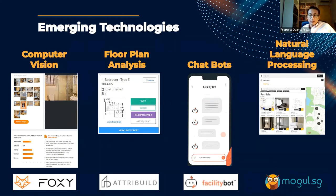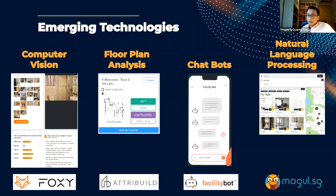A third emerging technology is chatbots. A recent application we've seen is in facilities management. Facility Bot is a company based in Singapore that integrates into WhatsApp, WeChat, and more — tenants or users can key in questions or requests into those existing chat applications and the bot will reply, streamlining work and reducing costs significantly. Chatbots are based on a number of techniques including natural language processing and in some cases deep learning.